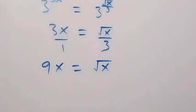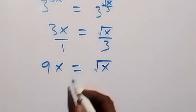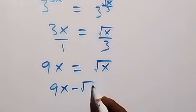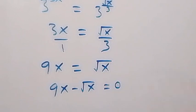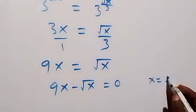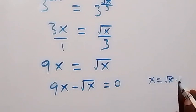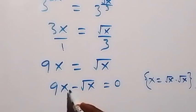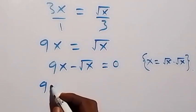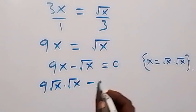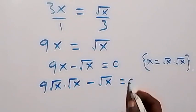Then next, we take root x to this side, and we have 9x minus root x now equals to 0. Now we can write x as root x times root x, so let's replace x here. We have 9 times root x times root x, then minus root x, now equals to 0.